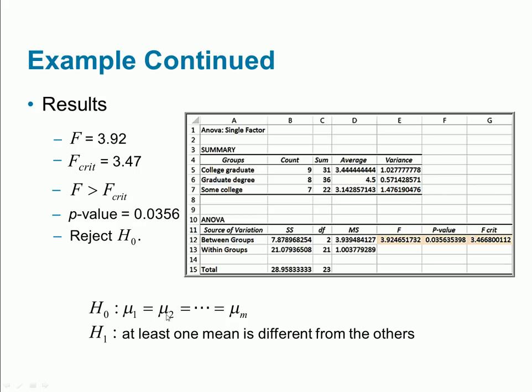For some college degree owners, there are seven of them, the total is 22, the average is 3.14, and the variance is 1.47. What I'm testing here is that my null hypothesis is that the average for college graduates equals graduate degrees equals some college. A visual check tells me there's an issue because 4.5 seems significantly higher, but I don't have evidence until I read this area.